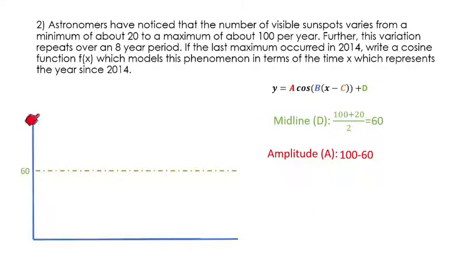For our amplitude, I could do 100, that maximum, minus 60, or I could do 60 minus that minimum of 20. But either way, we're going to get that amplitude of 40, meaning we're going to go 40 units above 60 and 40 units below 60, as I've kind of shown in my graph there.